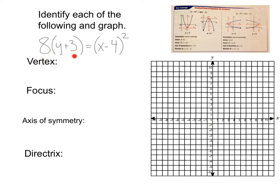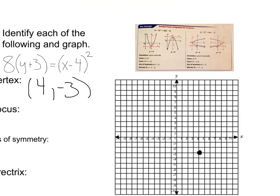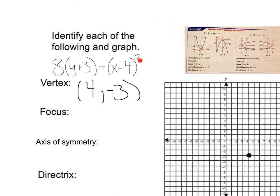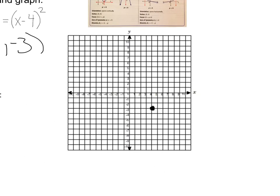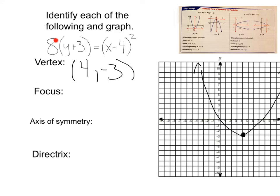Here we have 8 times the quantity (y plus 3) equals (x minus 4) squared. Again, let's start with our vertex. Our vertex is always h — opposite of whatever is grouped with the x — that's going to be 4, and k — the opposite of what's grouped with our y — that's going to be negative 3. Let's graph that vertex at (4, negative 3). Looks like we've got the x term squared, so we know we're opening either up or down. Our p term is positive, that means we're opening up. Next we need to find our focus, which means we need to find our p. Here 4p equals 8, so p equals 2.